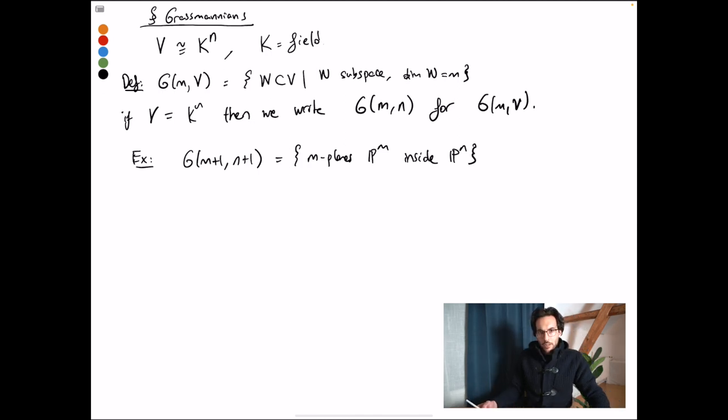And the identification is clear. So if I take w inside of k^(n+1), then there's the natural projectivization map to P^n, and there's a natural projectivization map of w, and of course this gives an inclusion of P(w) into P^n.